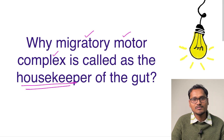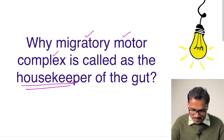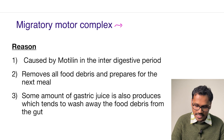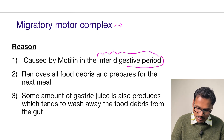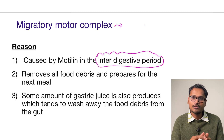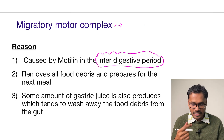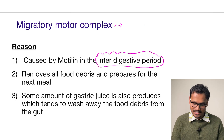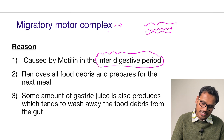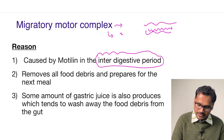The migratory motor complex, or MMC, acts like a sweeper in the GIT. It is the movement that happens in the interdigestive period — for example, between your morning meal at 8 and your next meal at 12 or 1 o'clock. For every 90-minute cycle, the MMC comes into the gut, creates movement, and usually occurs in three phases.